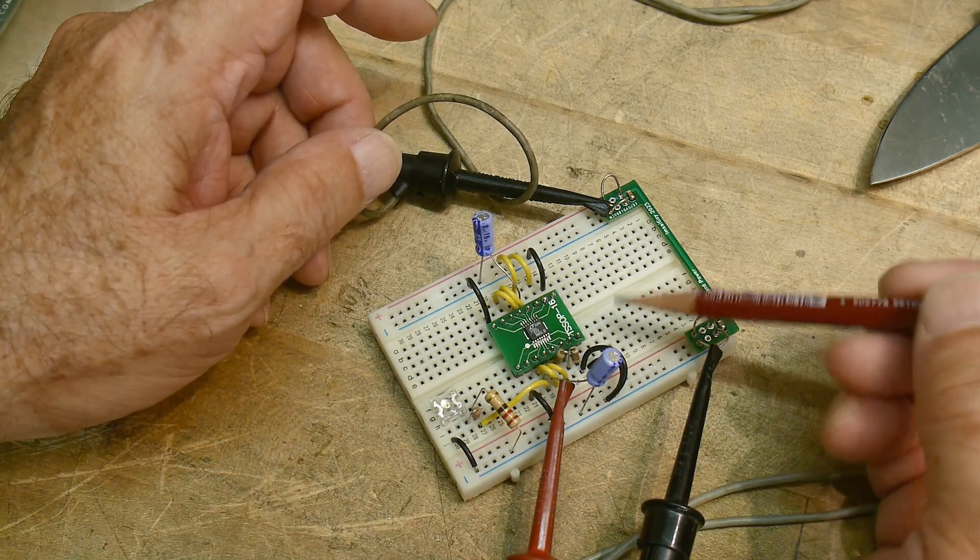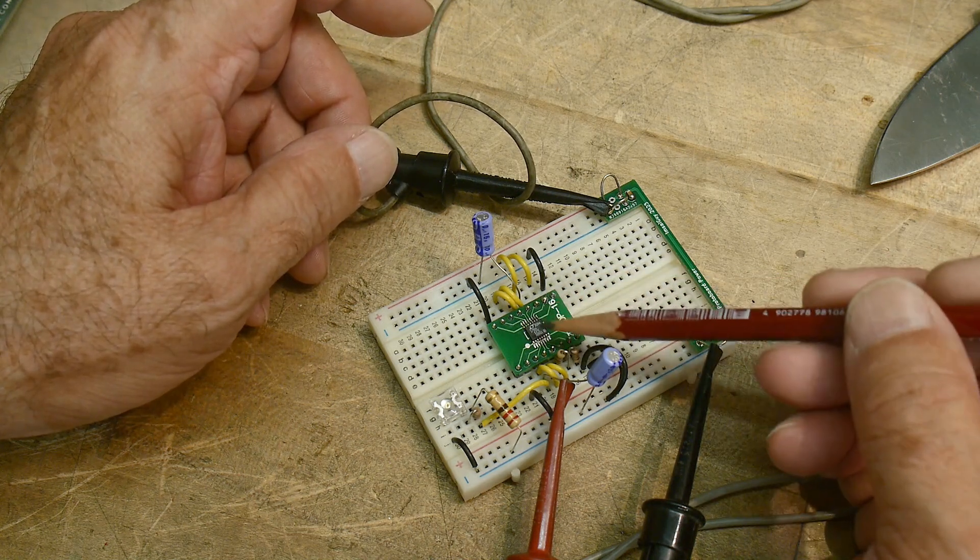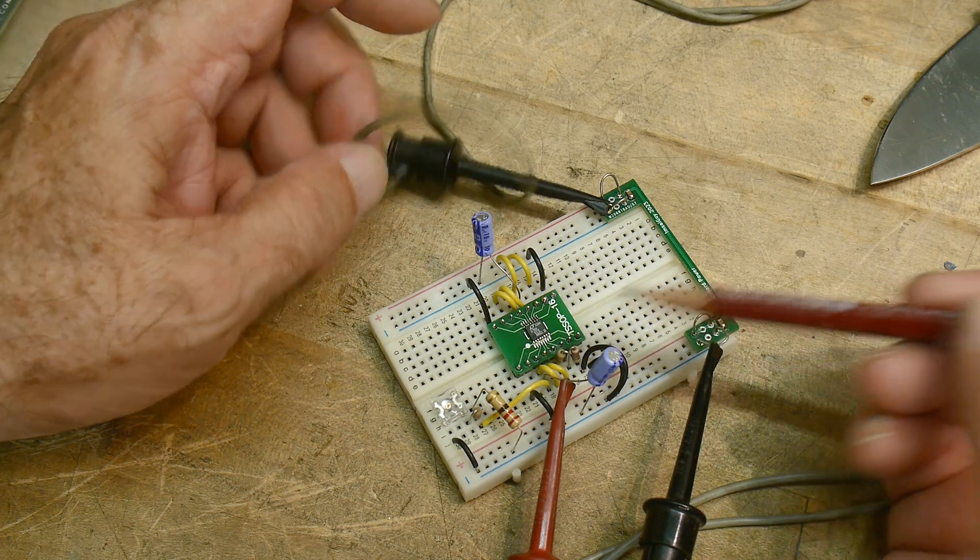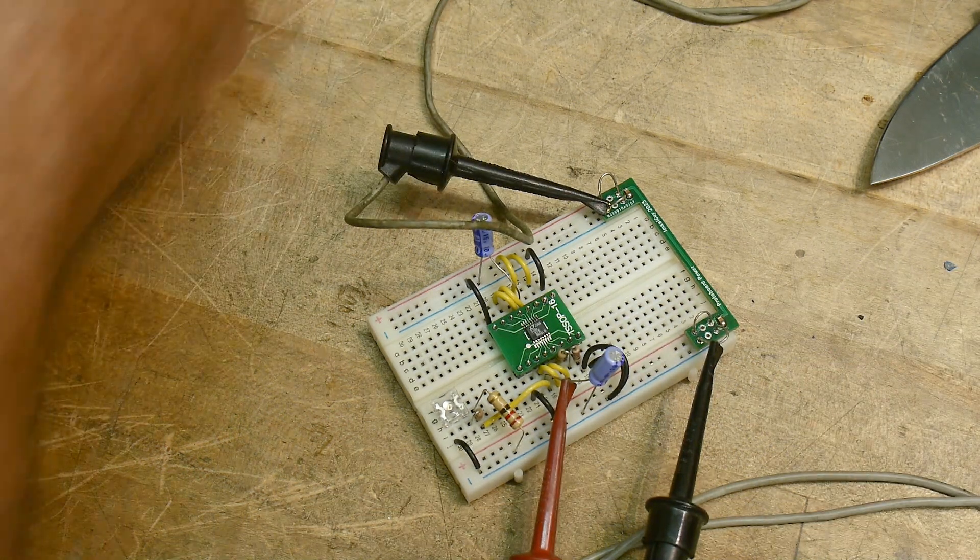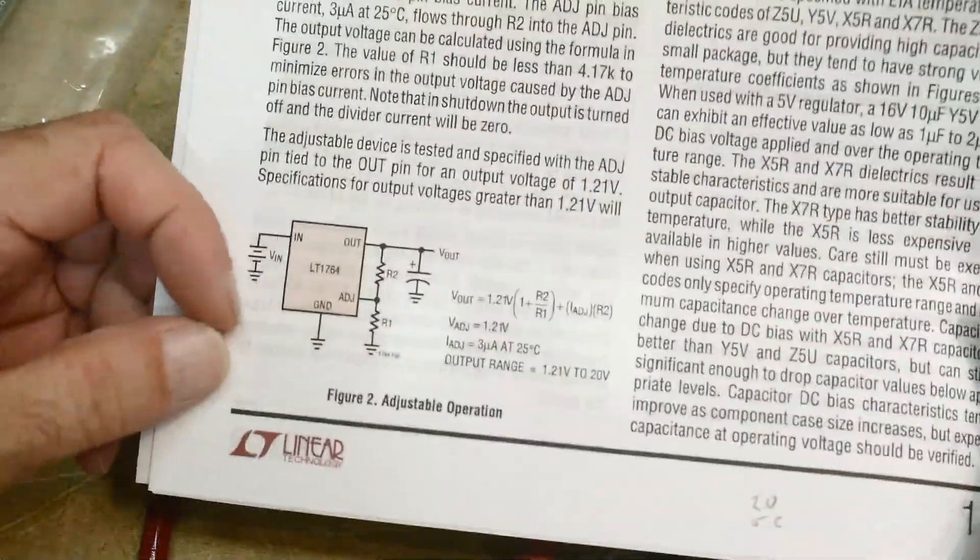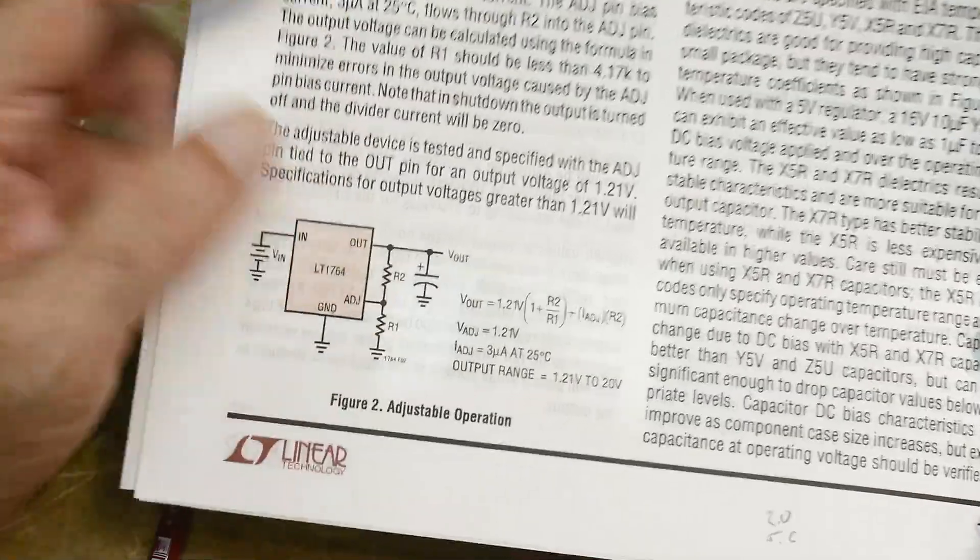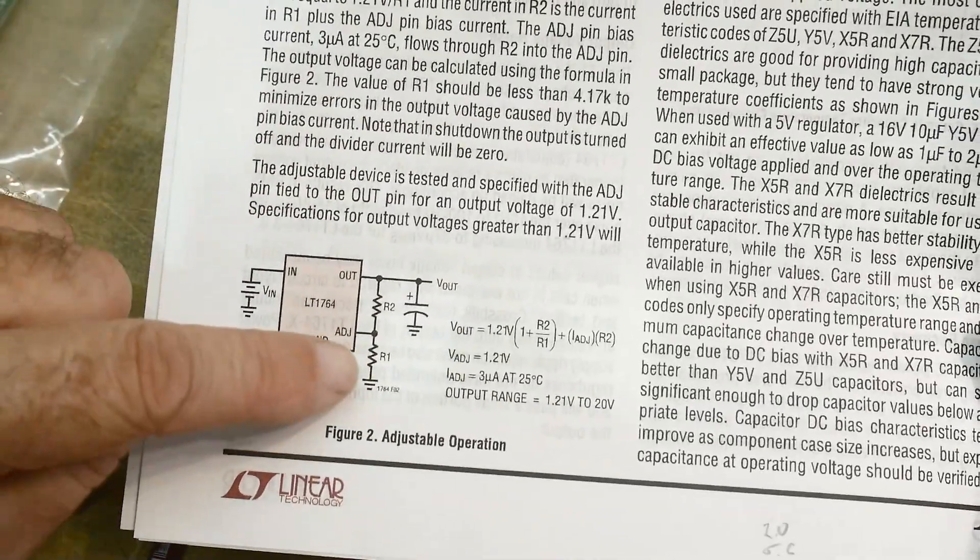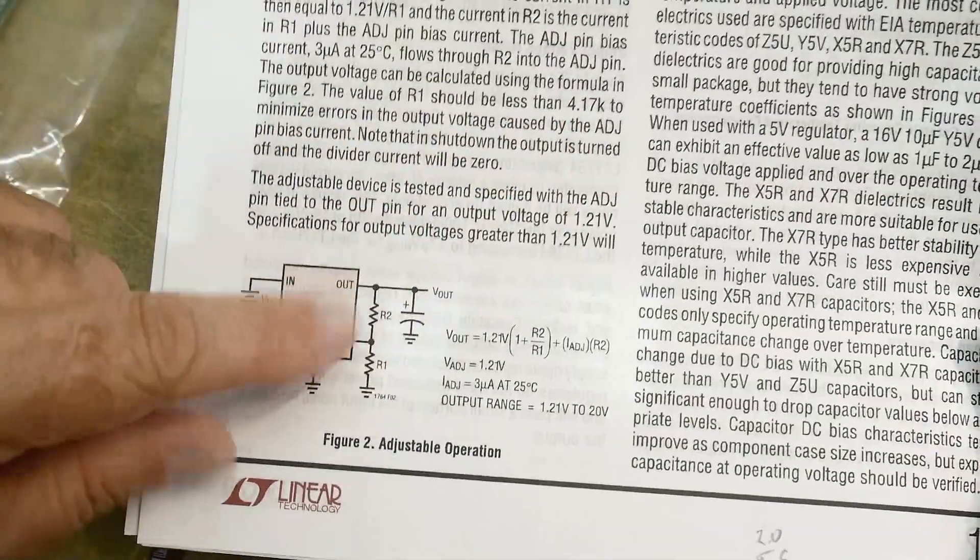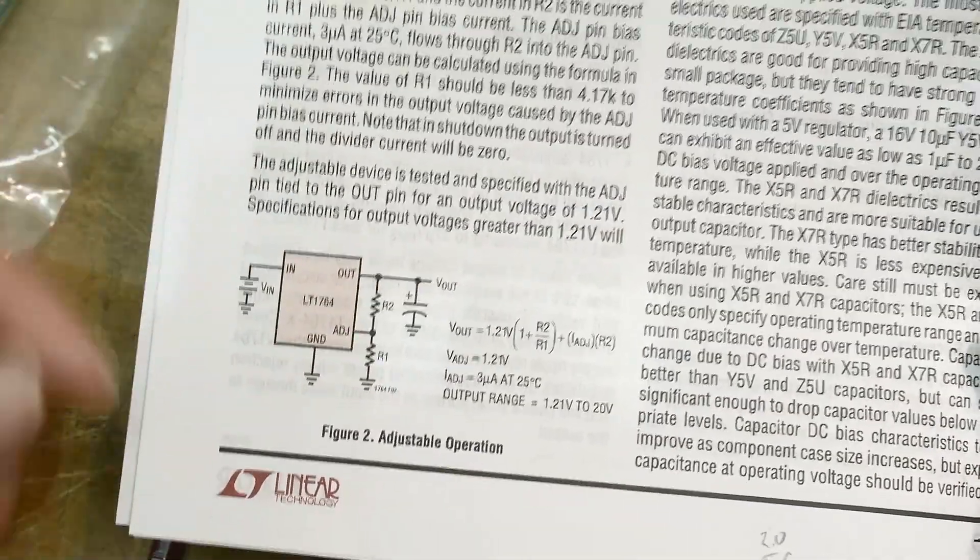You need to account for a little bit of internal current that the part uses, and you have to account for that in this resistor. Let me show you the formula. Okay, so it's right down here. You use this resistor divider R2 and R1. You do need to be aware that R1 you need to have less than 4k, and I started out with like a 10k there and it wasn't really working well. I couldn't figure out why, but the datasheet says this one needs to be less than 4k for it to work properly.